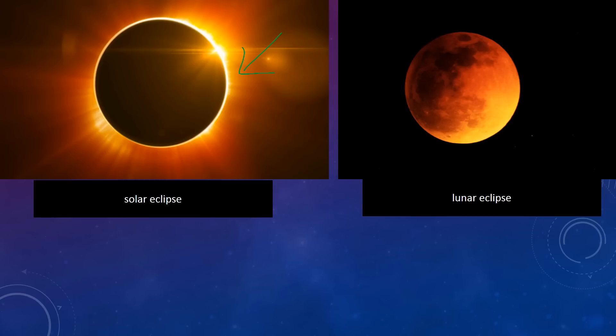So don't get confused. If it's a solar eclipse, it's the sun, sol. If you know Spanish, sol is sun. And luna in Spanish is moon. So lunar eclipse is the moon.